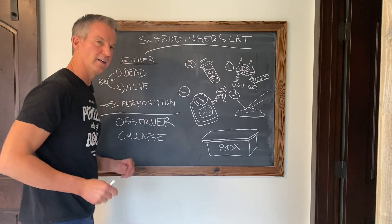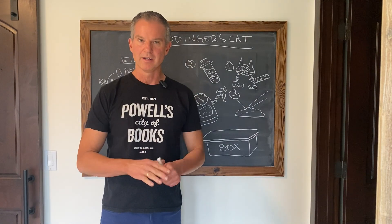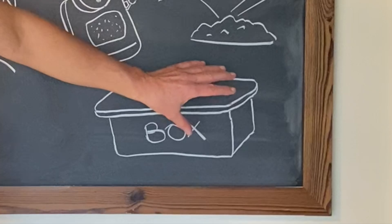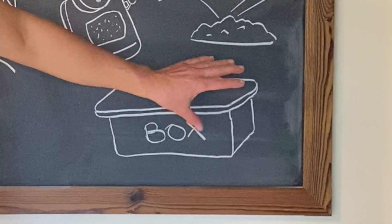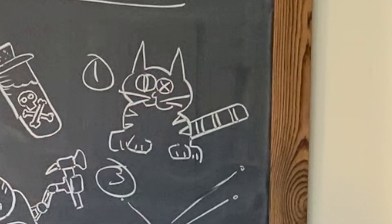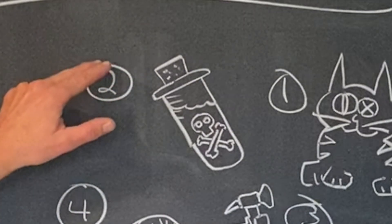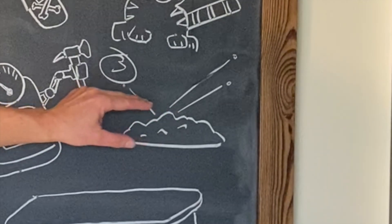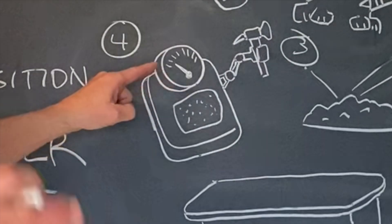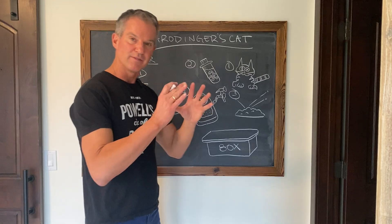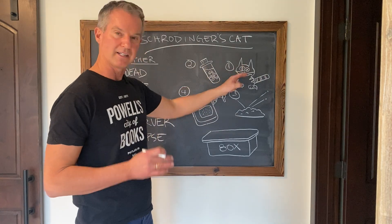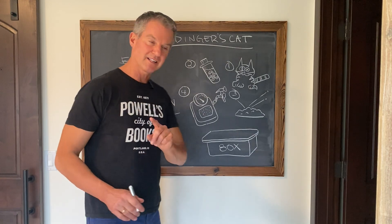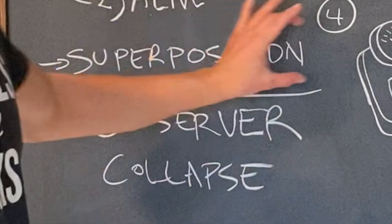So those are the key words in understanding Schrodinger's cat. To summarize: into a sealed box that you can't look inside, you put a living cat, a poison flask that will kill the cat if opened, radioactive material that will decay randomly, and something that can detect radioactive decay. If it detects that decay, it breaks the flask and the cat dies. As long as the box is sealed and you don't know what's going on inside, the cat exists as both alive and dead in a state of superposition.